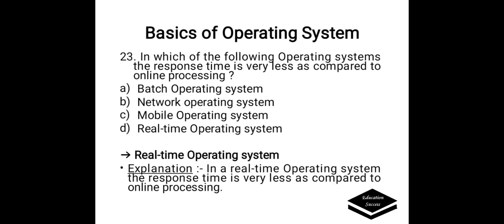In which of the following operating systems is the response time very less as compared to online processing? A. Batch operating system, B. Network operating system, C. Mobile operating system, D. Real-time operating system. Correct answer is D, Real-time operating system. In a real-time operating system, the response time is very less as compared to online processing.